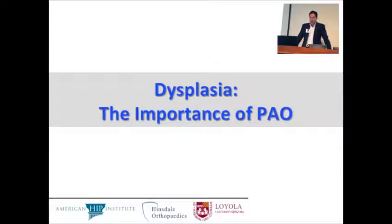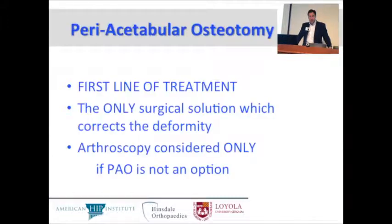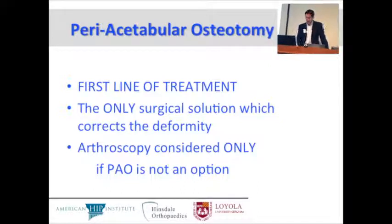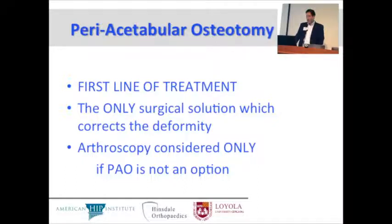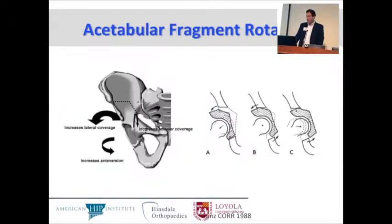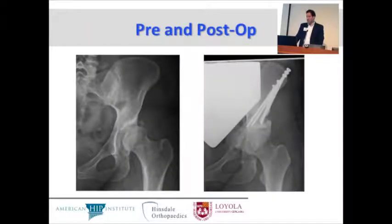A PAO is the first line of treatment for dysplasia. It is the only surgical solution which truly corrects the deformity. Arthroscopy treats parts of the problem but does not address the underlying bony deformity. Arthroscopy should be considered only if PAO is not an option. There is a pre and post-op x-ray here addressing dysplasia.